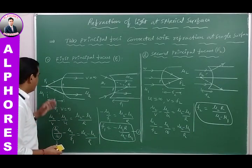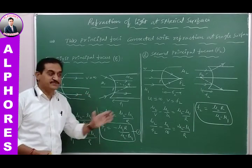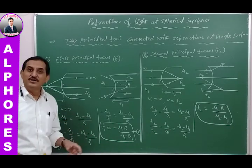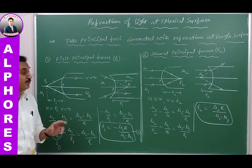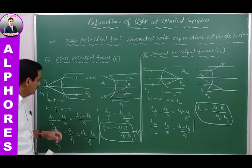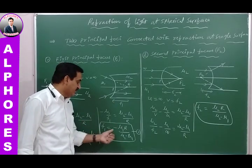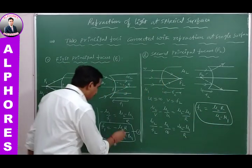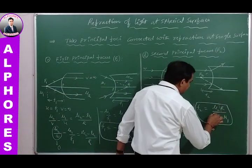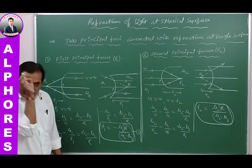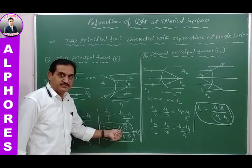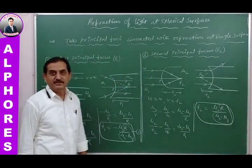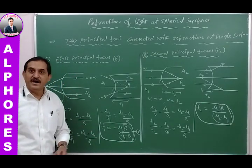So a spherical refracting surface has a first principal focus F₁ = −μ₁R/(μ₂−μ₁) and a second principal focus F₂ = μ₂R/(μ₂−μ₁). These two are not equal because in F₁ the numerator contains μ₁ while in F₂ it contains μ₂, and since μ₁ ≠ μ₂, the two focus points are at different positions.